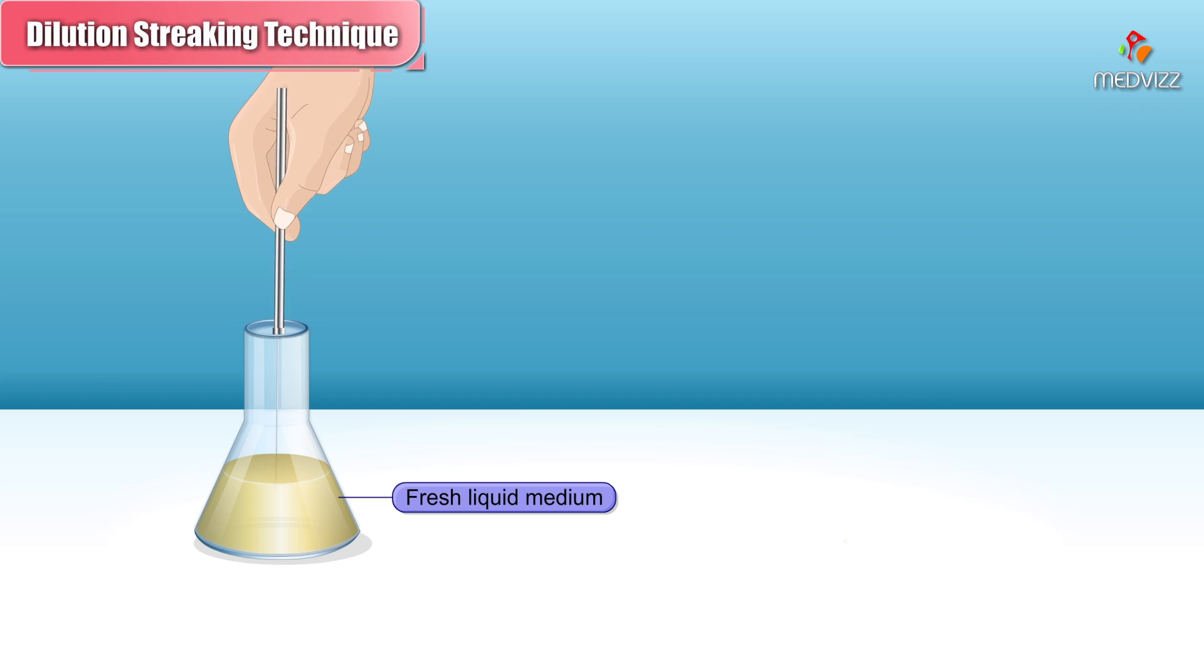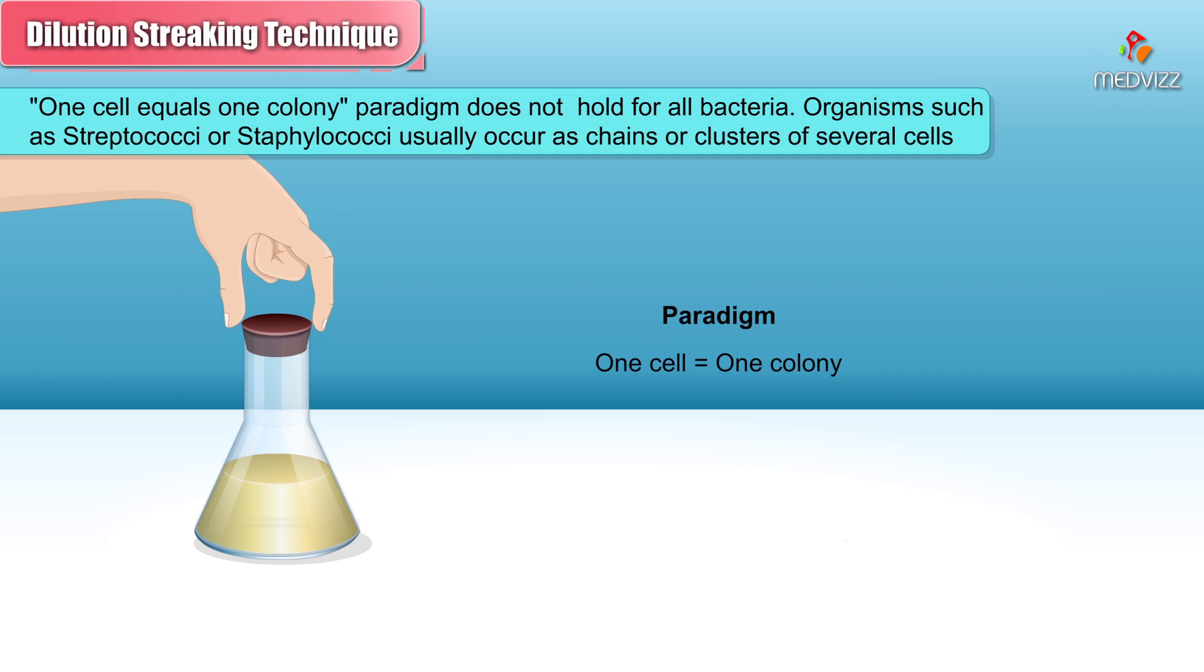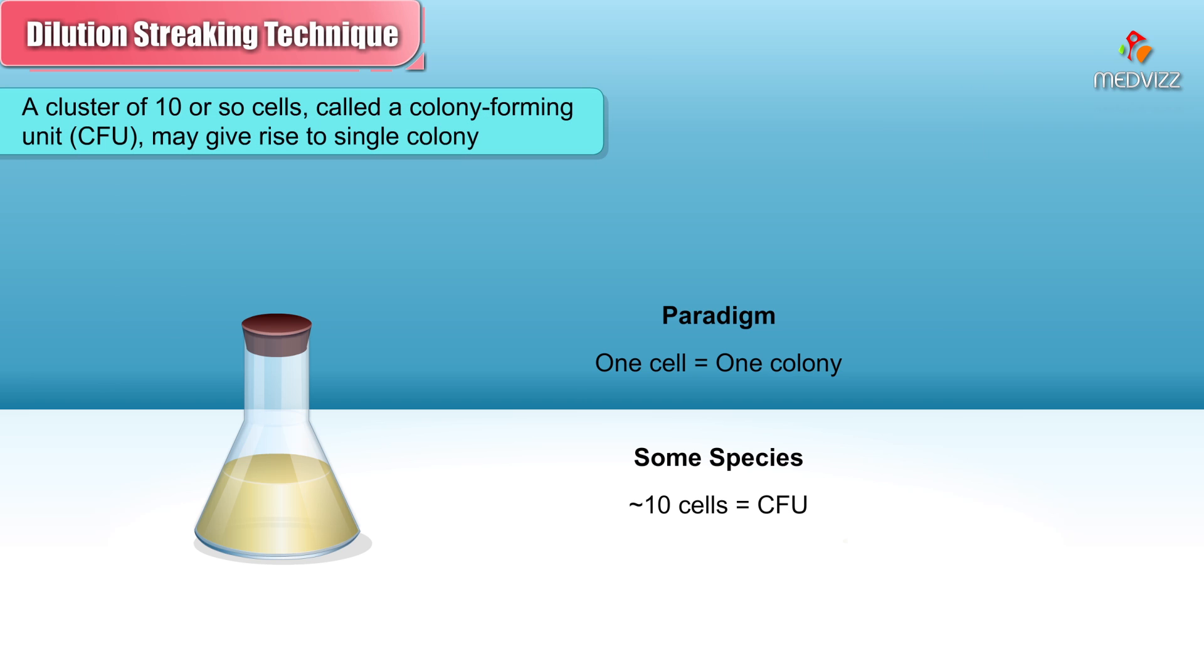It is important to note that the one cell equals one colony paradigm does not hold for all bacteria. Organisms such as streptococci or staphylococci usually occur as chains or clusters of several cells. A cluster of 10 or so cells, called a colony forming unit or CFU, may give rise to a single colony.